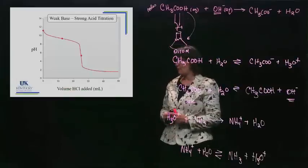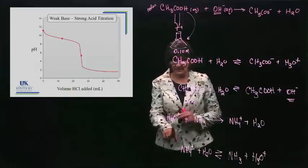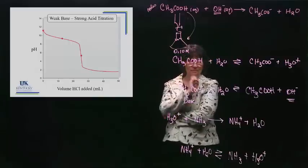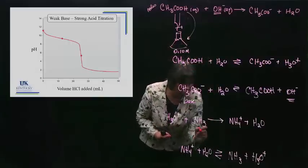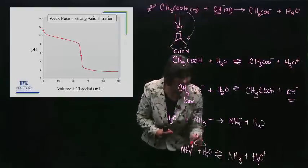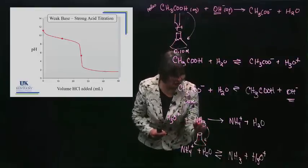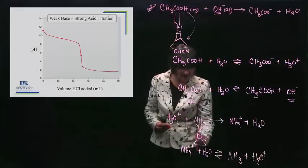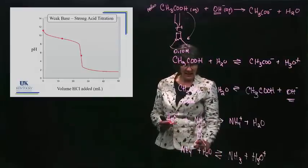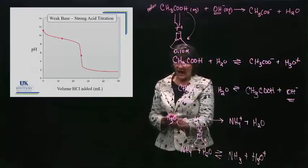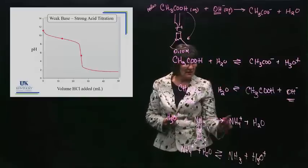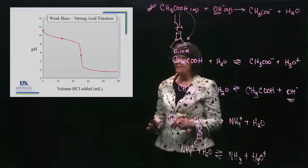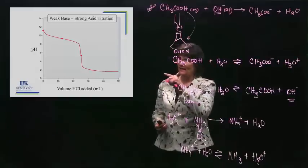We start off monitoring the flask. The flask has the base in it, so it's got a high pH. The strong acid is in the burette. As we start adding a little bit of acid, we convert some of the base to its conjugate acid — we'll have a weak base and its conjugate acid, which is a buffer. So we have this buffer range and we see the pH drops and levels off a little bit. It starts at 11.12 if it's a 0.1 molar solution.